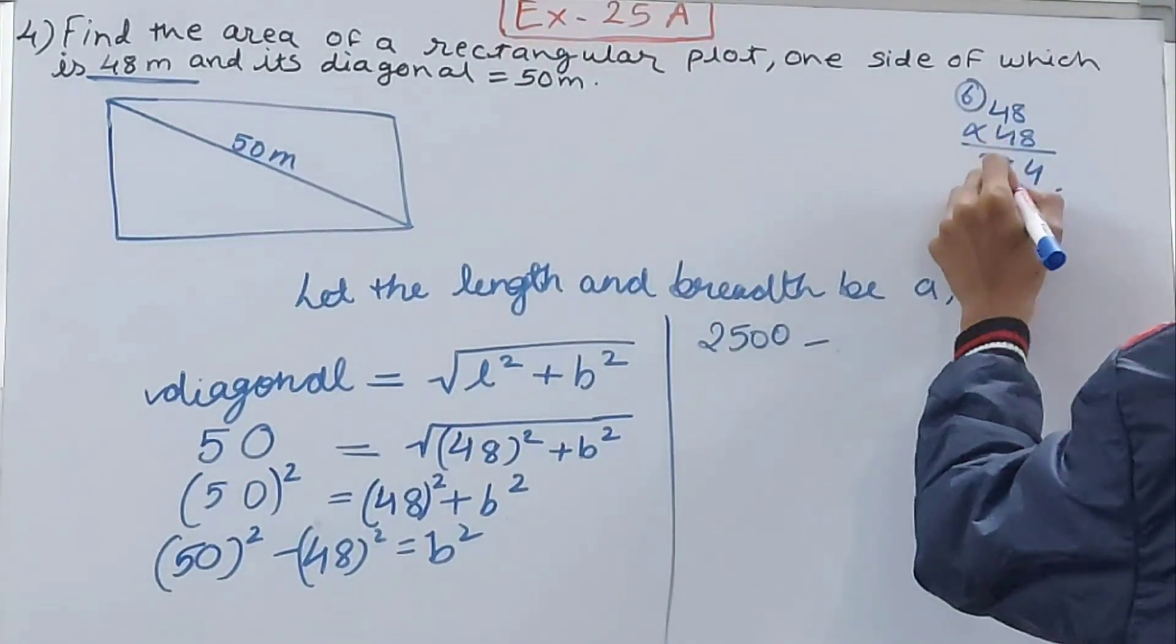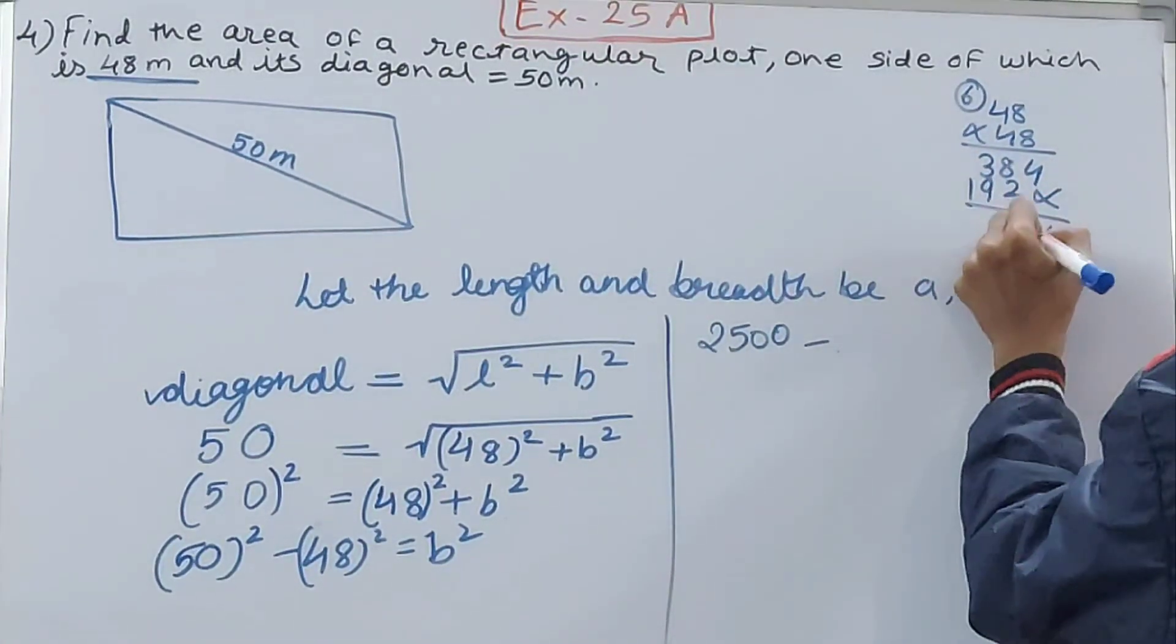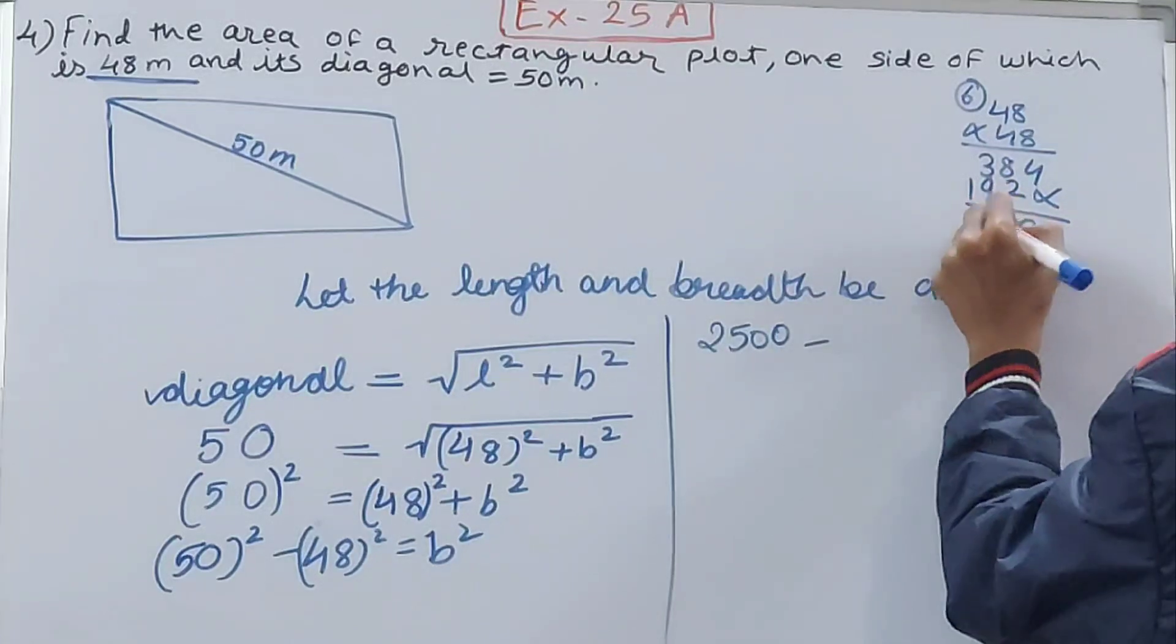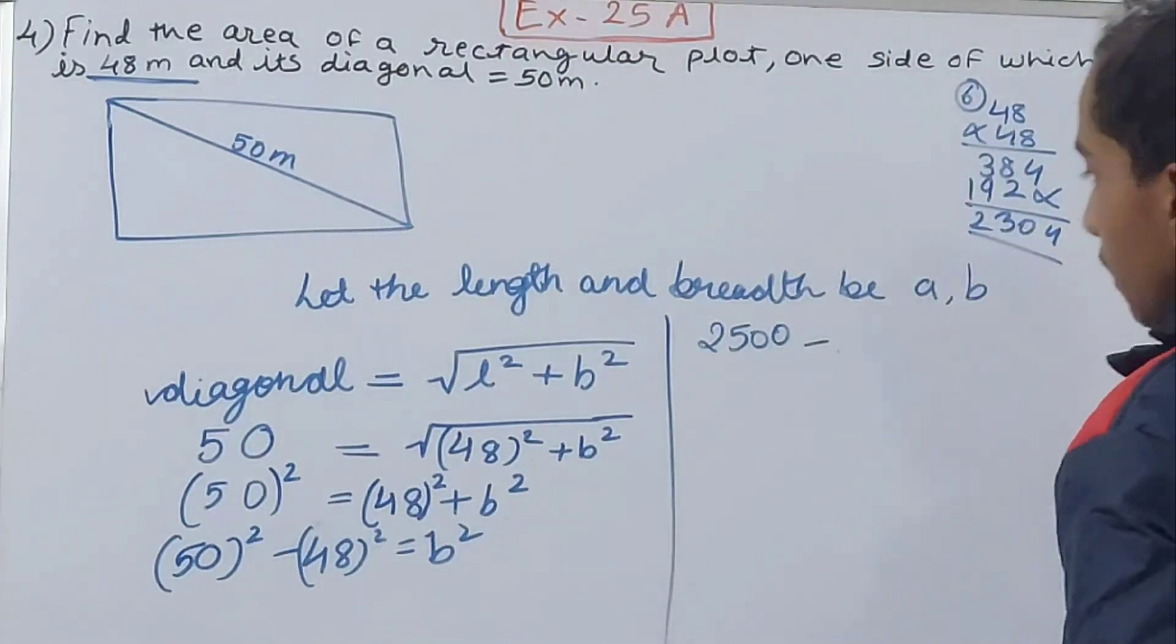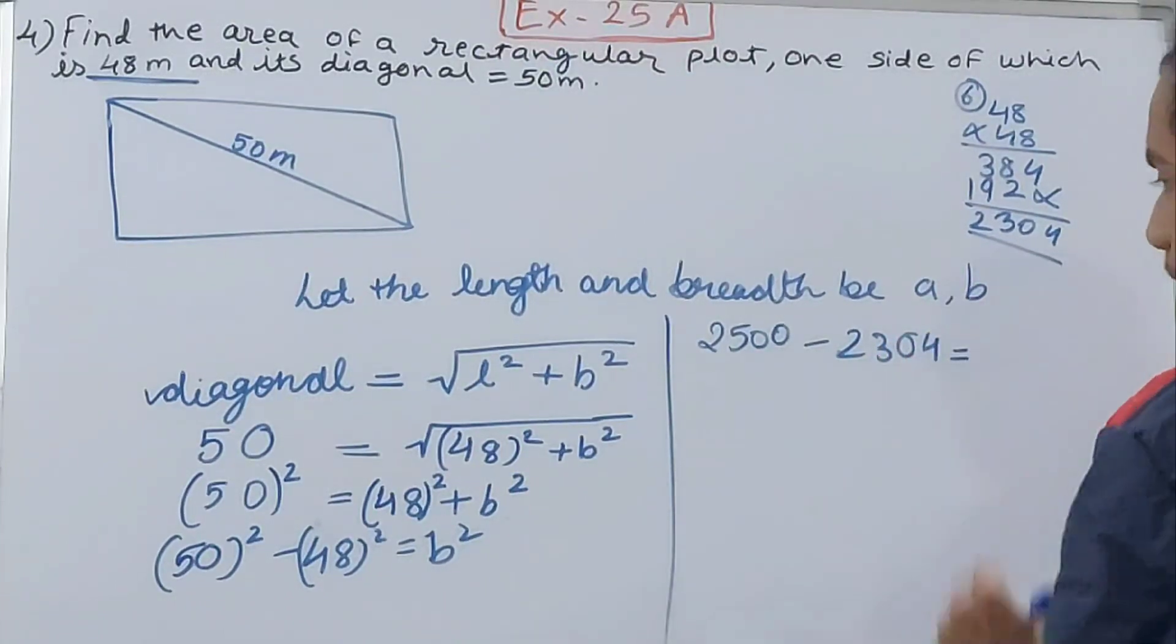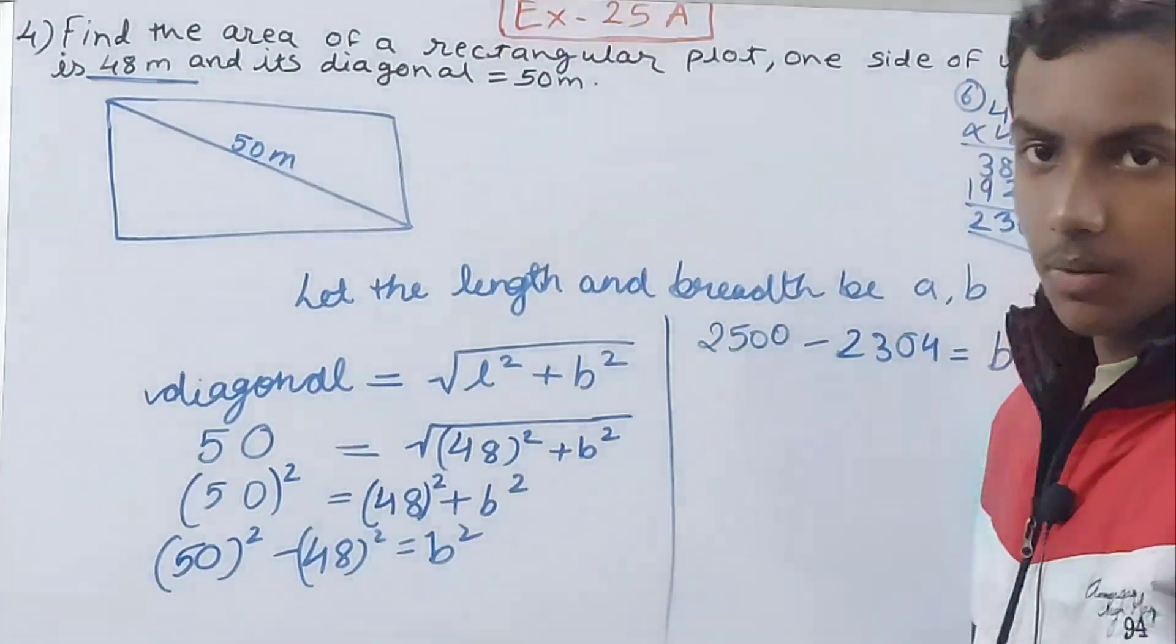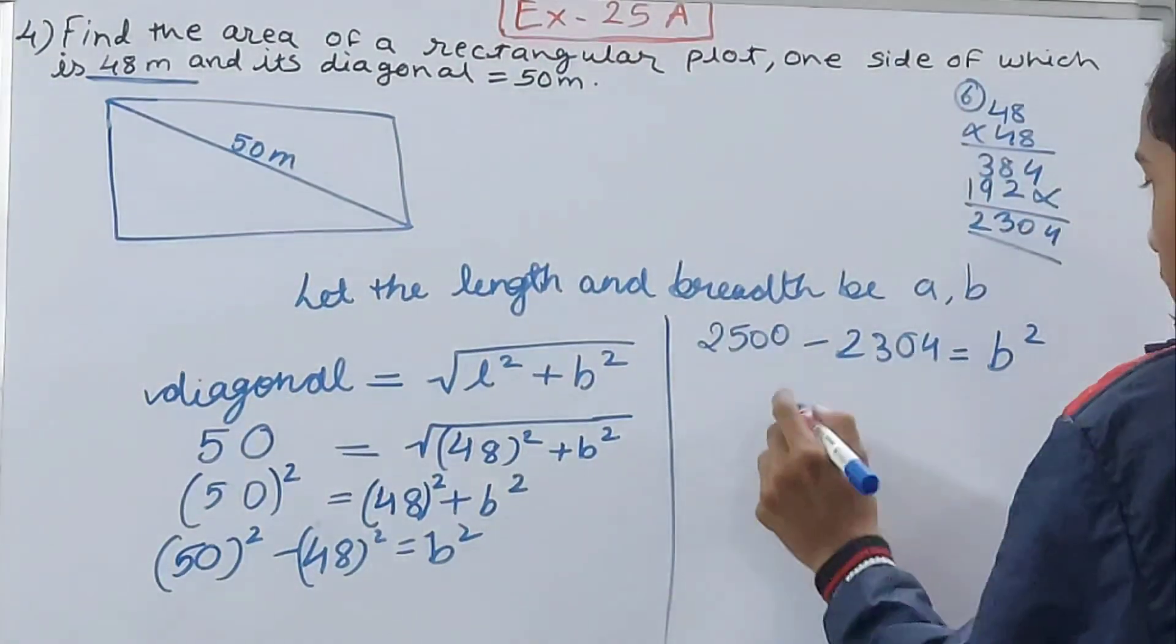So 384 over here, here we will have 2 and 3, so 192, 4, 10, 1, 13, 1, 2304. So 2304 minus, that is equal to b².